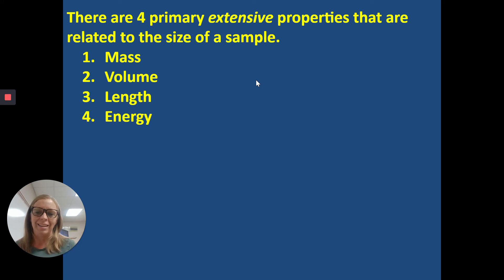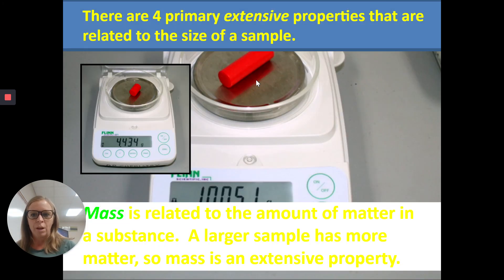When we're talking about extensive properties, it's going to be M, V, L, and E. There's two other ones that we don't talk about and you will learn these in high school, but we will be focused on mass, volume, length, and energy.